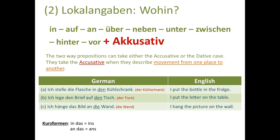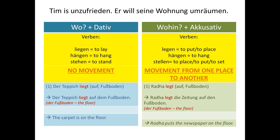Third: 'Ich hänge das Bild an die Wand' — I hang the picture on the wall. Here the position changes: it was on the floor and then I put it onto the wall. In accusative, 'die Wand' remains 'die Wand' — it does not change to 'der Wand' as it did in dative. This is the key difference.